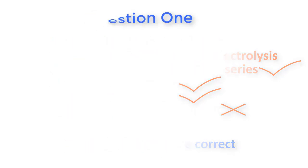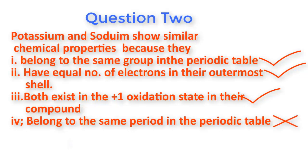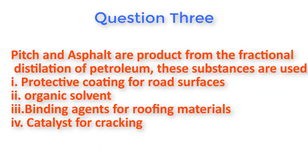Question number two: Potassium and sodium show similar chemical properties because they belong to the same group in the periodic table, have equal number of electrons in their outermost shell, and both exist in the plus one oxidation state in their compounds. Option four is wrong — potassium and sodium do not belong to the same period in the periodic table. So options one, two, and three are correct, and the right answer is D.